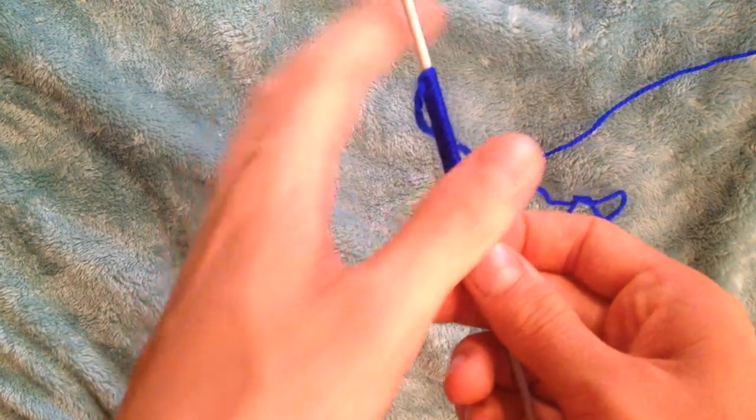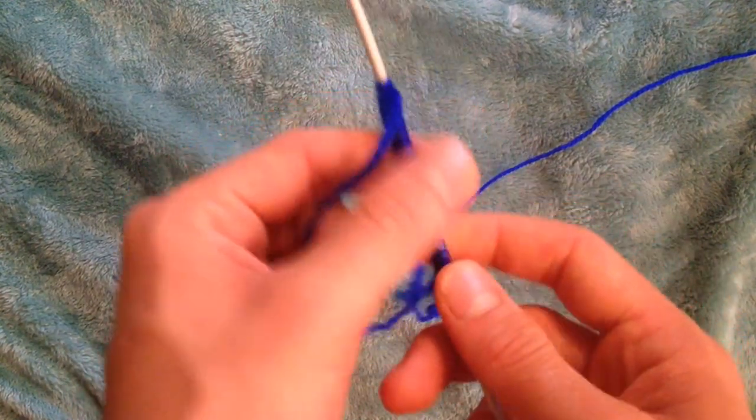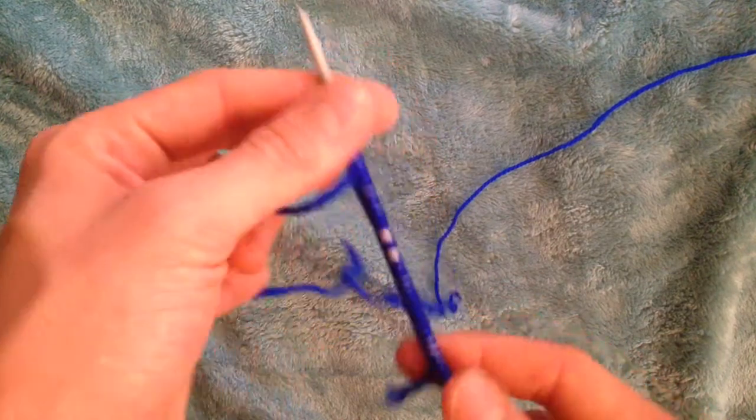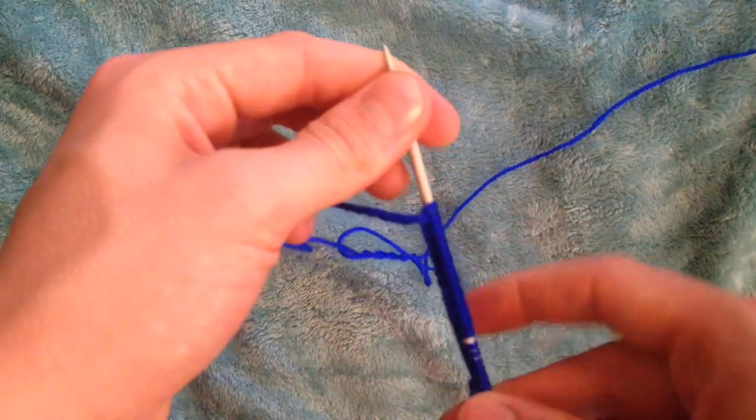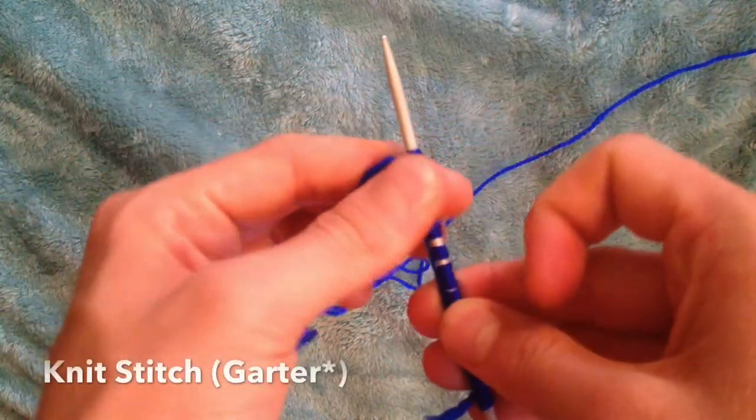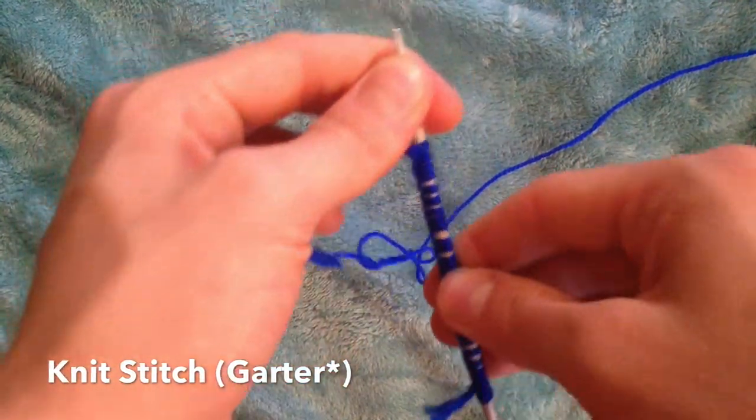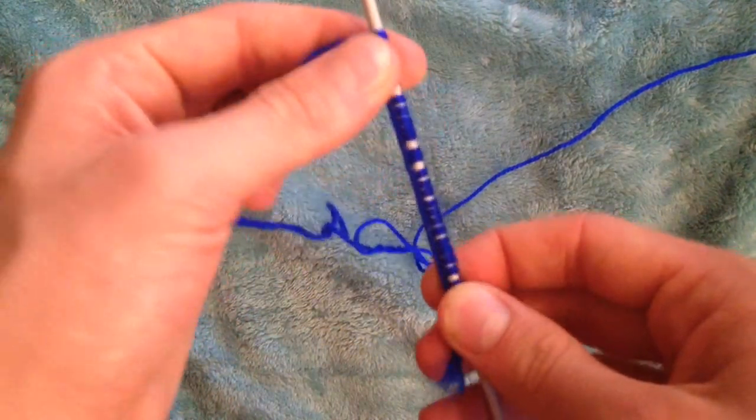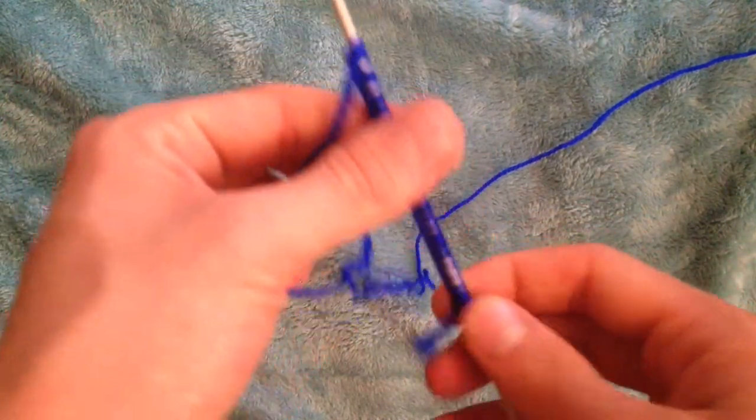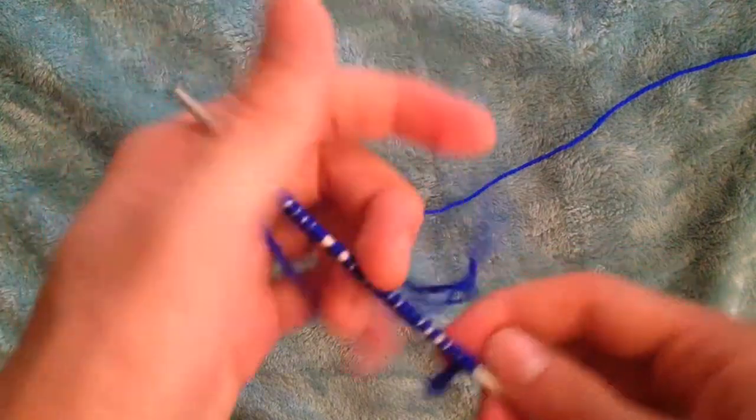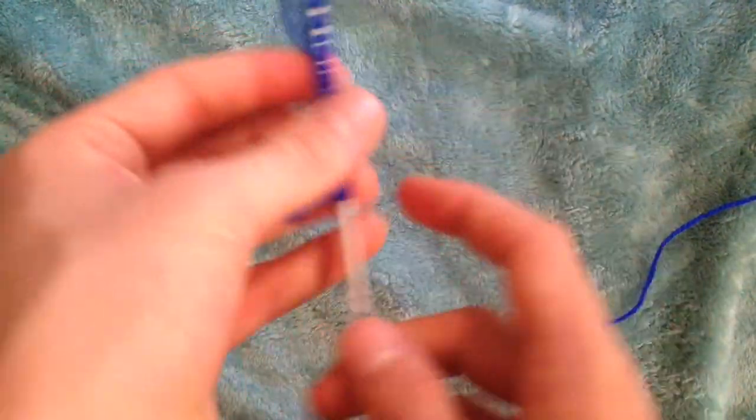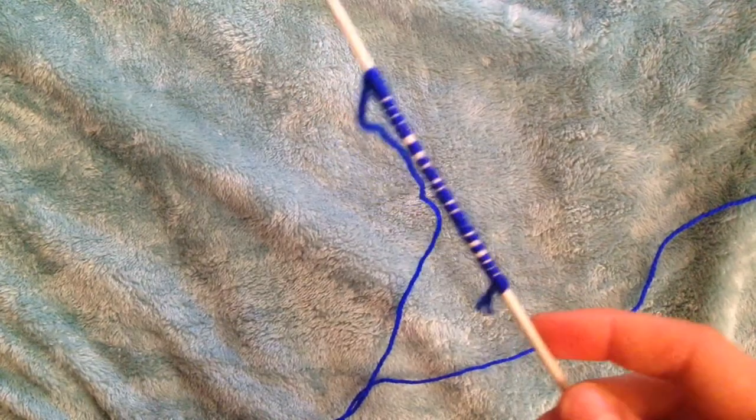Alright, so these are your 30 stitches, what you want to do is just spread them along the needle a little bit. And now we are going to start doing the knit stitch, also known as the garter stitch. And this is the process that you're going to be repeating through most of the time that you're making your creation. So, I need you to watch carefully.